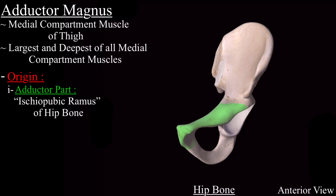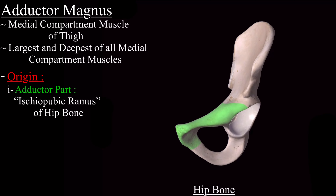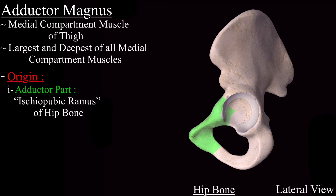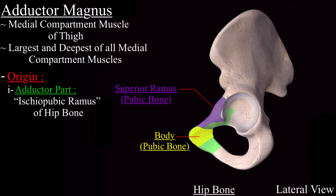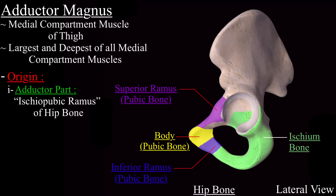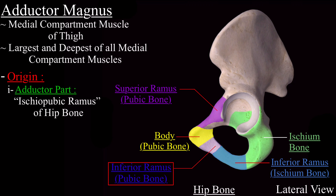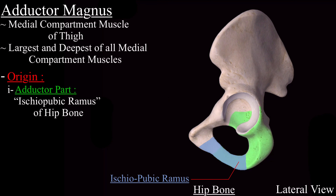This is the isolated hip bone with the anterior view. The adductor magnus originates from the ischiopubic ramus — the inferior ramus of the pubic bone together with the inferior ramus of the ischium form the ischiopubic ramus, and from the ischiopubic ramus originates the adductor part of the adductor magnus muscle.